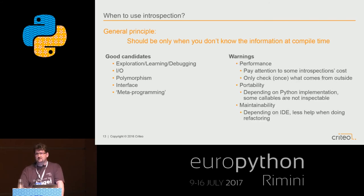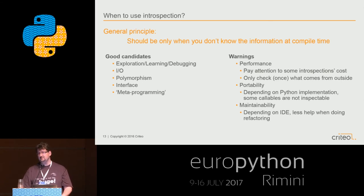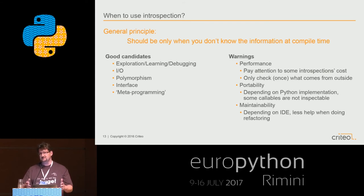Three words of warning. First, performance - accessing an attribute has almost no cost, but some introspection cases can be more expensive, so don't check the same thing multiple times; check once when you receive the object. Second, portability - depending on the Python implementation, some objects may not be inspectable, so consider this if you need cross-implementation compatibility. Third, maintainability - depending on your IDE, you may get less refactoring help, because classes are referenced as strings when calling them.